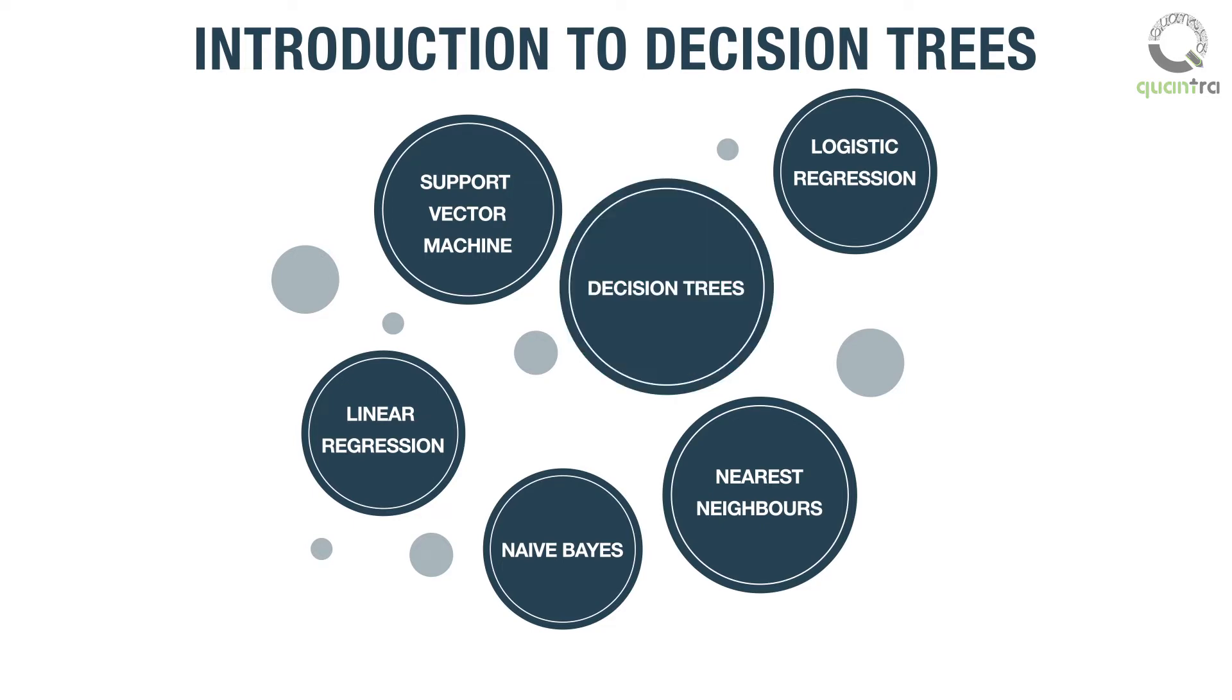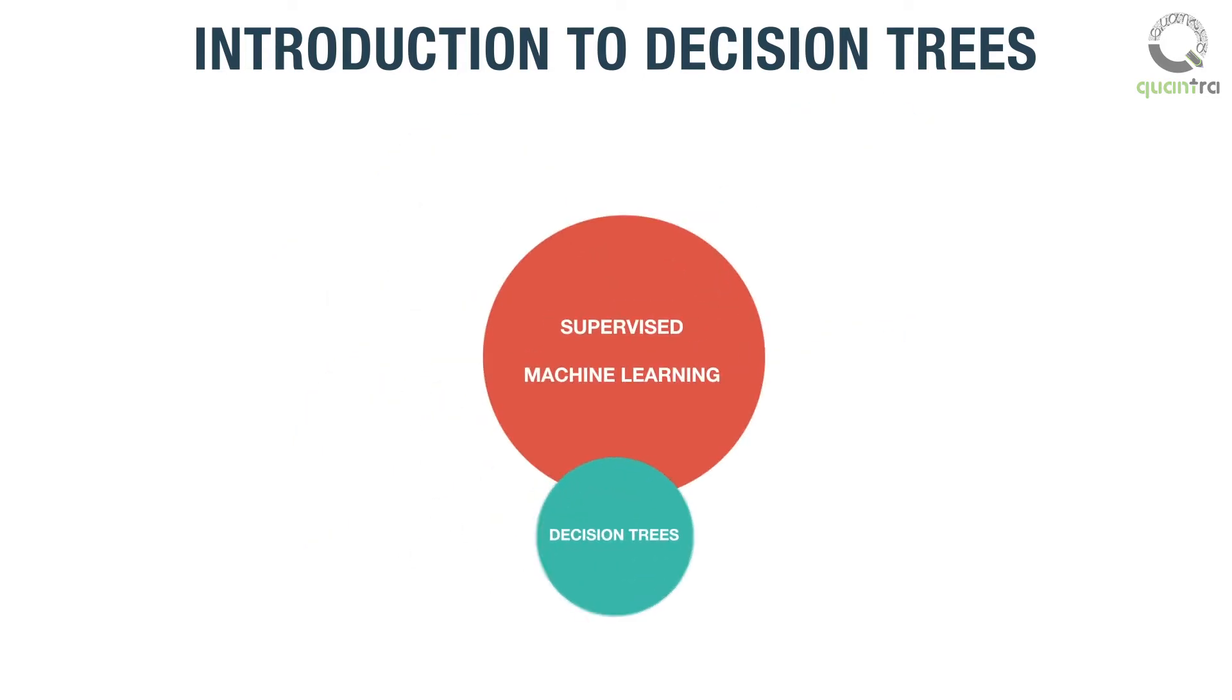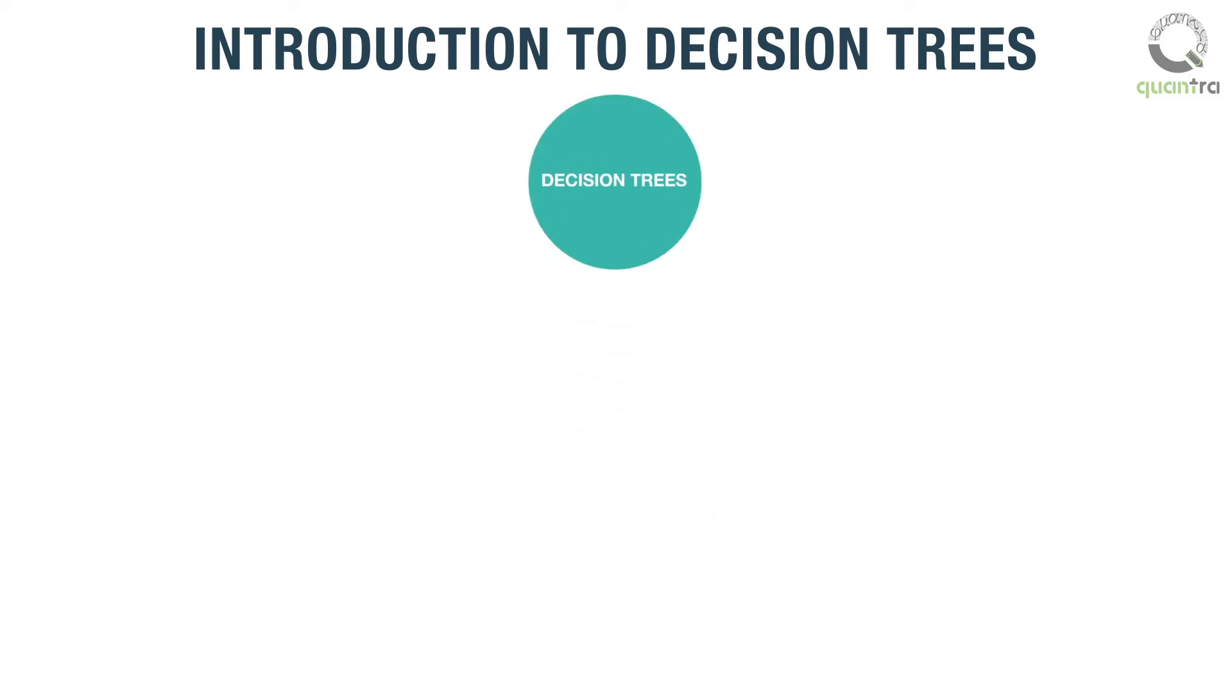Decision tree algorithms fall under the category of supervised machine learning and are used for both classification and regression problems.